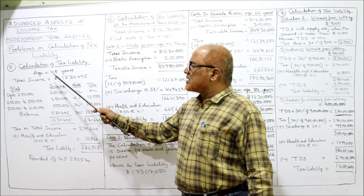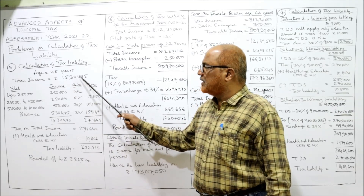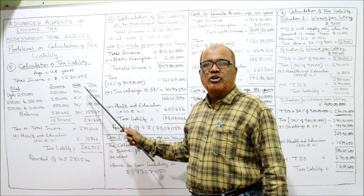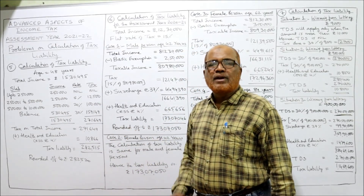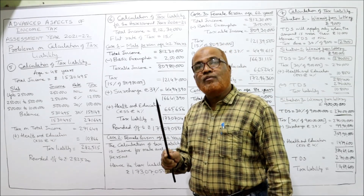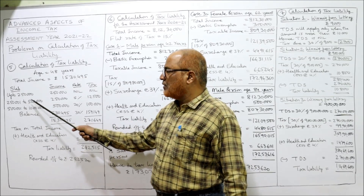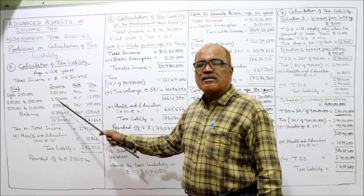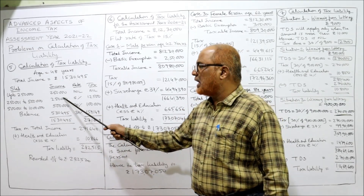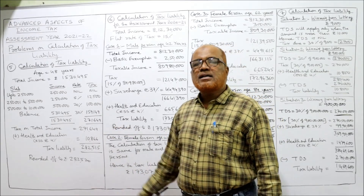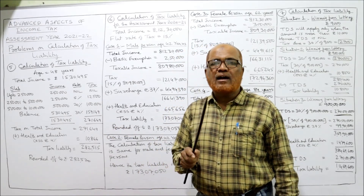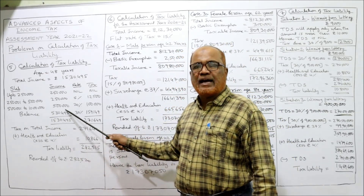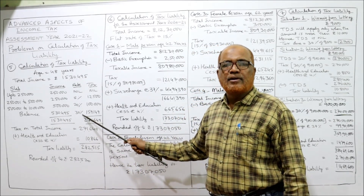Calculation of tax liability: age 48 years, total income is 15,34,495. First slab — up to two lakh fifty thousand: income is two lakh fifty thousand, nil tax. Next slab — from two lakh fifty thousand one rupee to five lakh: income is two lakh fifty thousand, tax rate is five percent. Five percent of two lakh fifty thousand gives twelve thousand five hundred. Next slab — from five lakh one rupee to ten lakhs: income is five lakh, tax rate is twenty percent. Twenty percent of five lakh comes to one lakh.